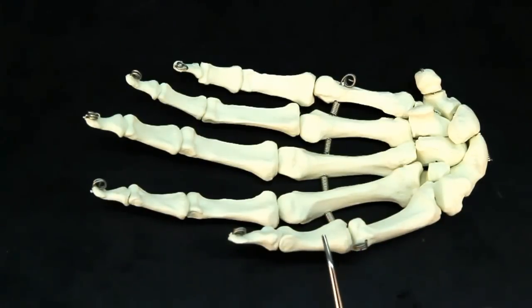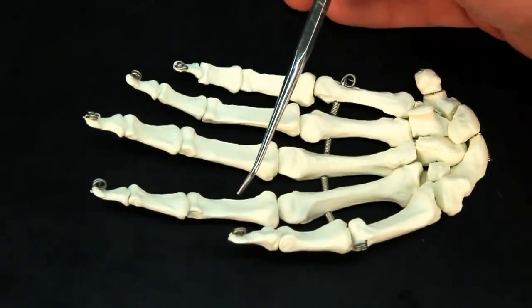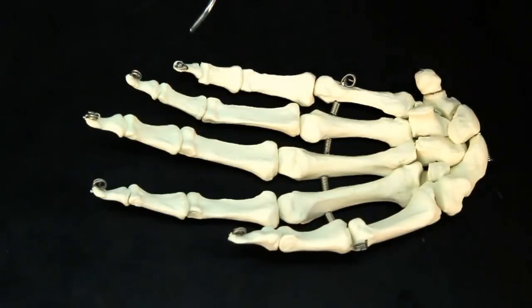So the thumb only has two, proximal and distal. The four fingers have proximal, middle, and distal phalanges.